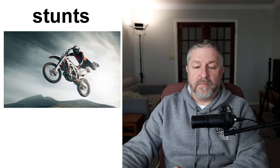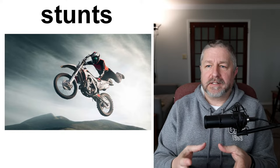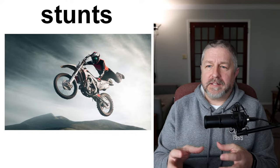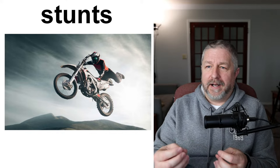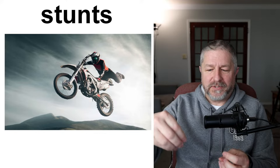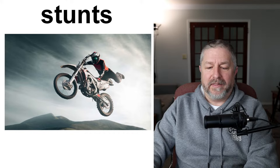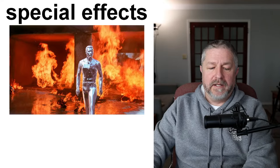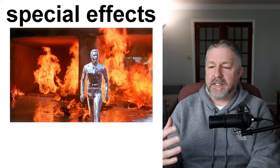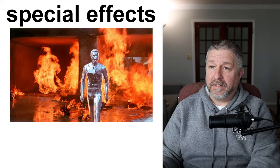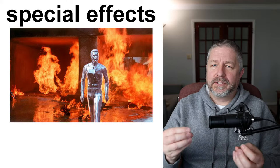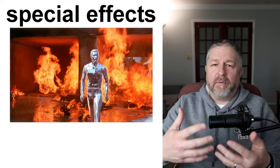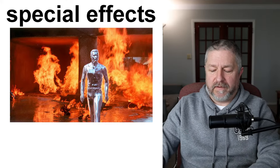In an action movie there will be lots of stunts — times when actors ride motorcycles dangerously or do things you would never do in real life, like jumping off a building and landing safely in a garbage dumpster. There will also be a lot of special effects, where computers are used to create scenes. Special effects happen regularly in action movies. When a scene is too dangerous for the actors, or too expensive to do for real, they might use special effects — for example, blowing up a building on a computer rather than in real life.